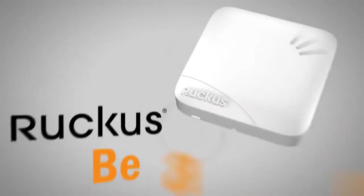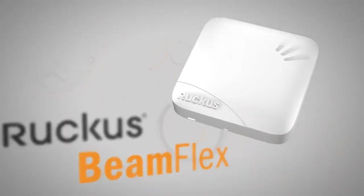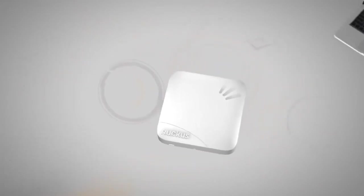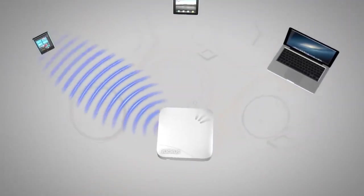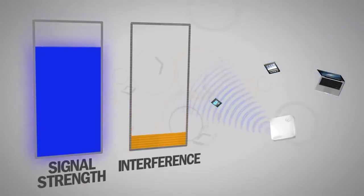Enter Ruckus BeamFlex. BeamFlex is the only adaptive Wi-Fi antenna technology that focuses and controls Wi-Fi signals. By increasing signal and decreasing interference, Wi-Fi performance is improved dramatically.